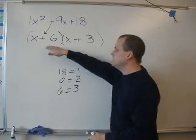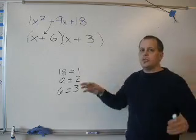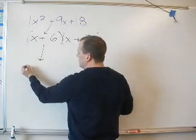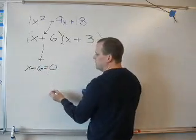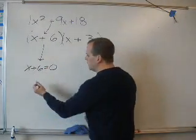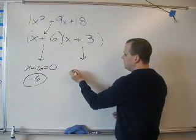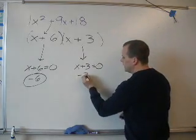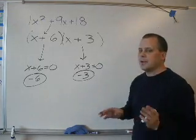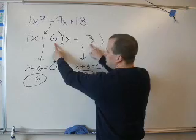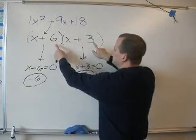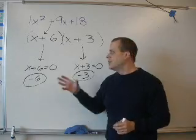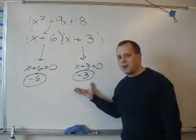What you need to do, as soon as you get to this point — x plus 6, x plus 3 — you need to break off this little problem. It's just like the quadratic formula where we split it into two parts. What plus 6 equals 0? Negative 6. And then take this other little problem: x plus 3 equals 0. What plus 3 equals 0? Negative 3. Make sure 6 plus 3 equals 9 and 6 times 3 equals 18. Double check your work. These are our x-intercepts.